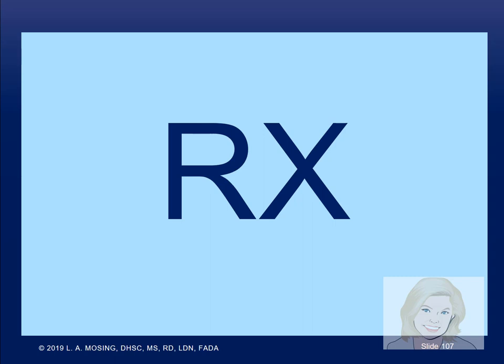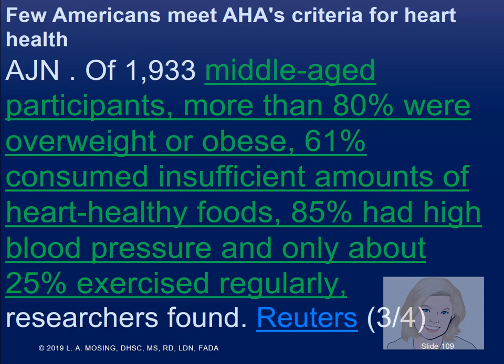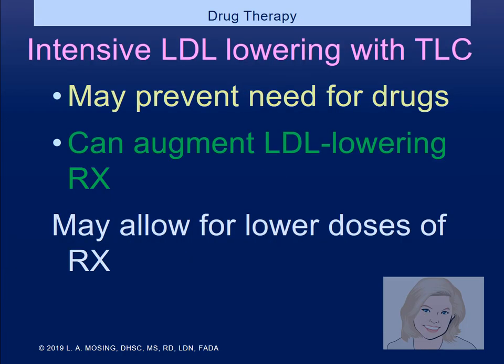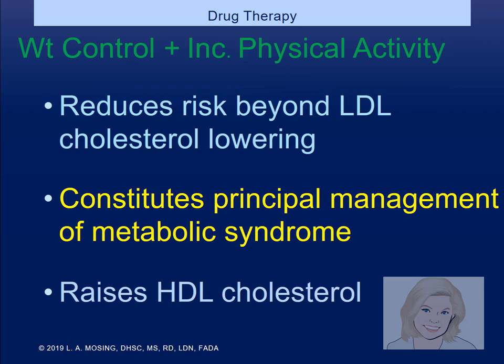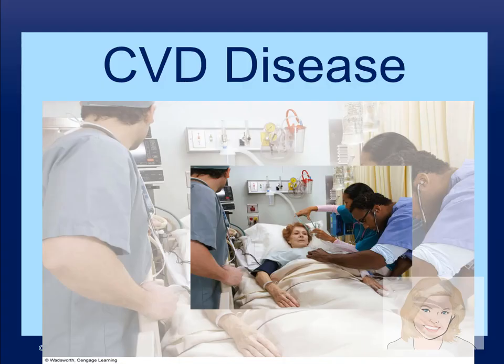Fewer than one in ten Americans meet at least five of the American Heart Association guidelines for a healthy heart. When looking at middle-aged participants, they just need help making the changes necessary for better health. Drugs are only used along with a healthy diet — drugs do not replace lifestyle changes, just as we'll see when we talk about diabetes.